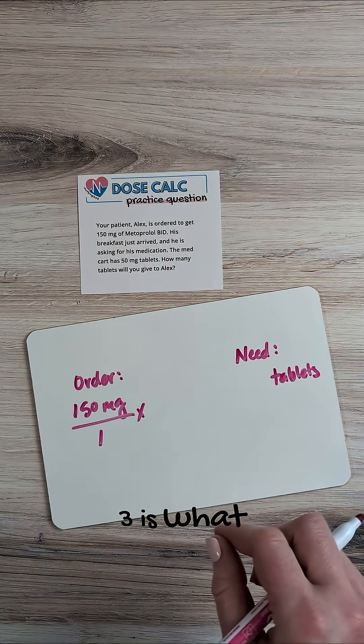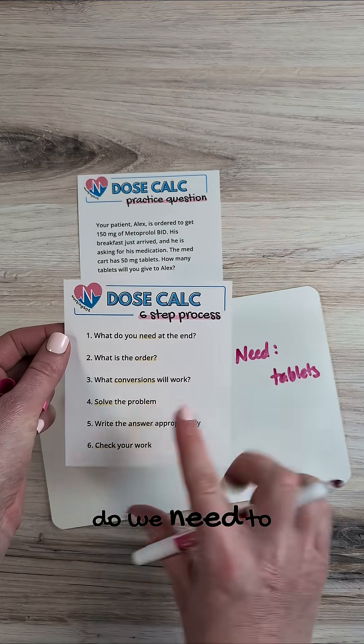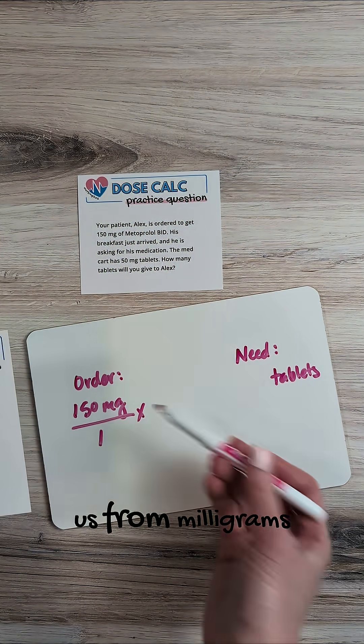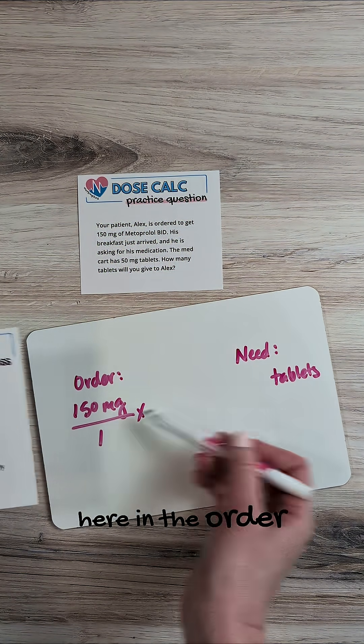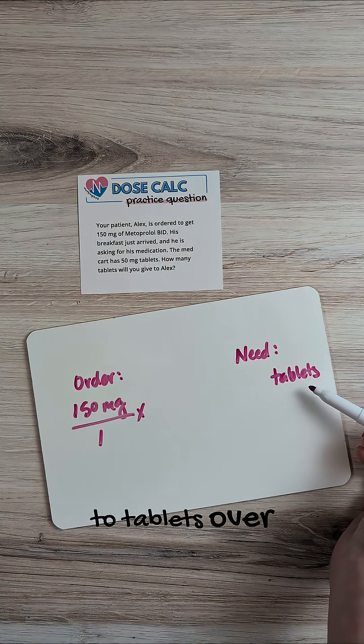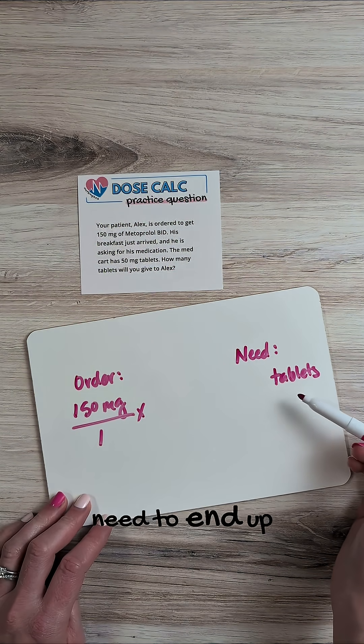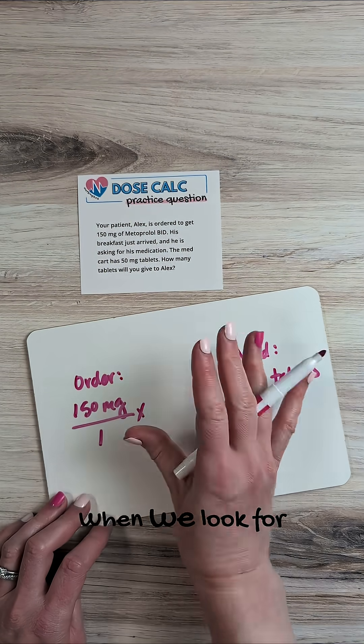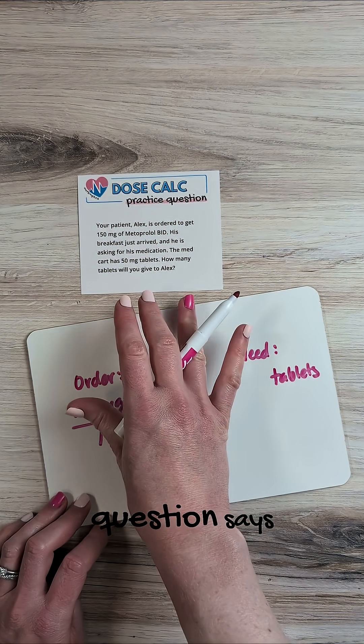And then step number three is what conversions do we need to work with here? What conversions are going to work to get us from milligrams over here in the order to tablets over here, which is what we need to end up with. Now, anytime with this, we want to look at the question first. When we look for conversions, look at what the question says.